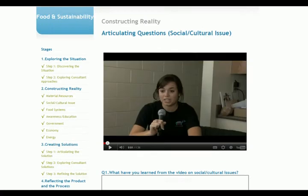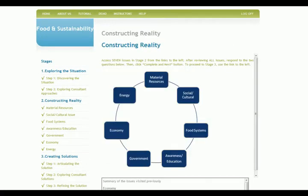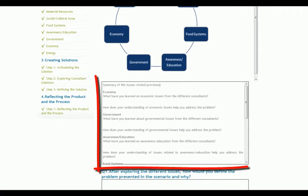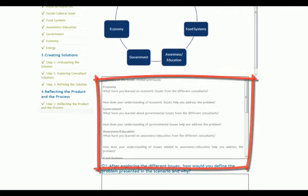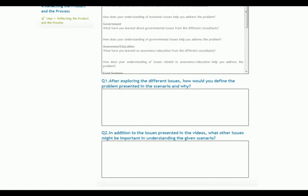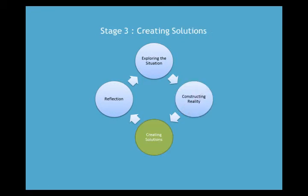Students should explore all seven issues in Stage 2 before moving on. After exploring and completing all seven issues, students are provided with a summary of their responses to each issue and are given the opportunity to define the problem presented in the scenario in their own words, as well as present other issues which might be important in understanding the given scenario. After students finalize the definition of the problem, they move on to the next stage to offer their own solutions.